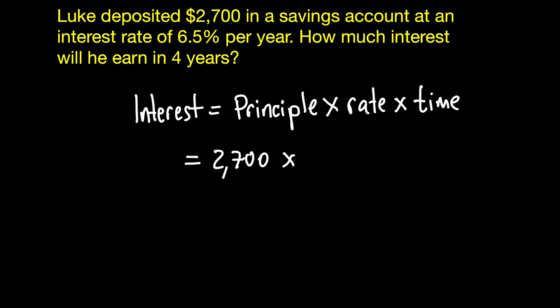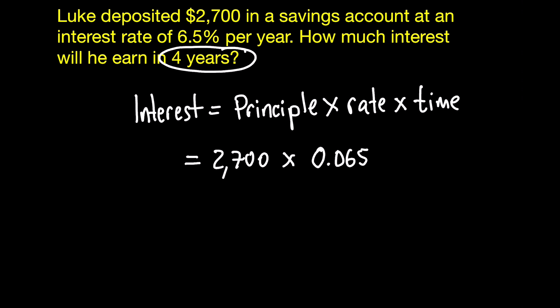Remember that when we multiply by a percentage, we always change it to a decimal instead. So 6.5% is actually, in decimals, 0.065. And then you're going to multiply that by the number of years, which is the time — so multiply it by four.